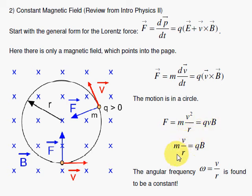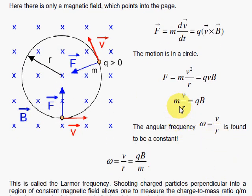And remember, your angular velocity is your tangential velocity here divided by R, the radius of your circle, and when you do that, you can get the equation here that the V over R, your omega, is QB over M, and that's the Larmor frequency.